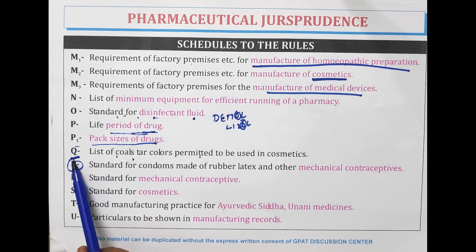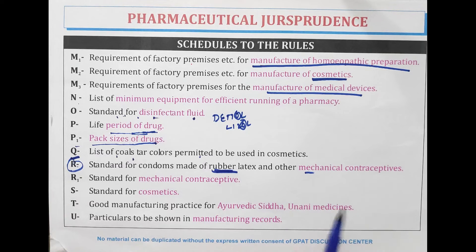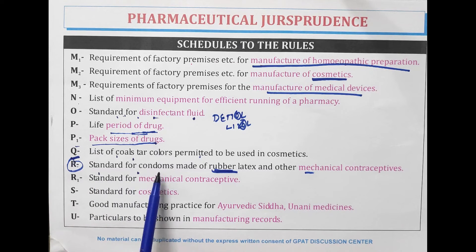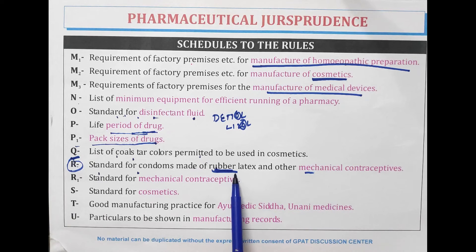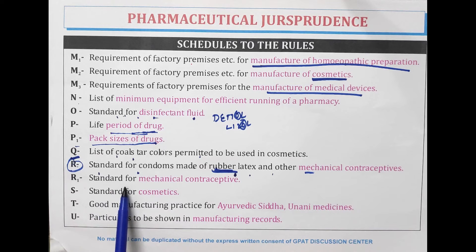Schedule R — R for rubber, and rubber is used in condoms which are a mechanical contraceptive. So Schedule R is the standard for condoms made of rubber latex and other mechanical contraceptives. Schedule R1 is the standard for other mechanical contraceptives.